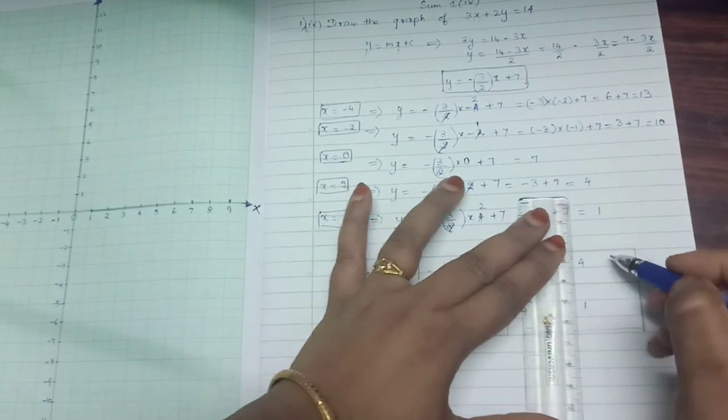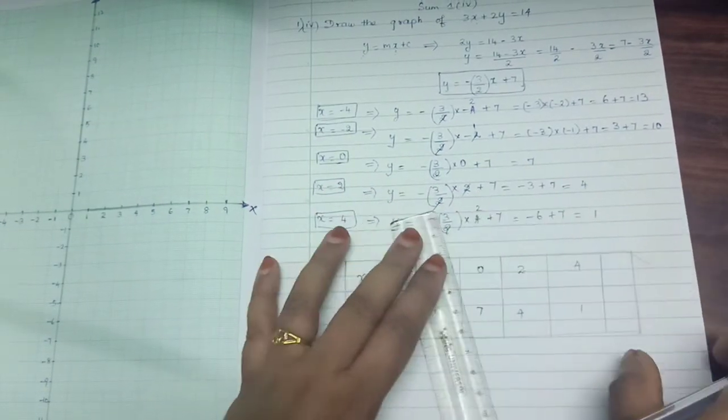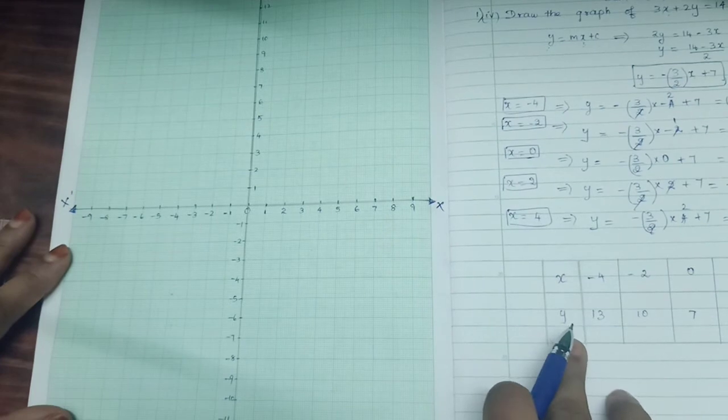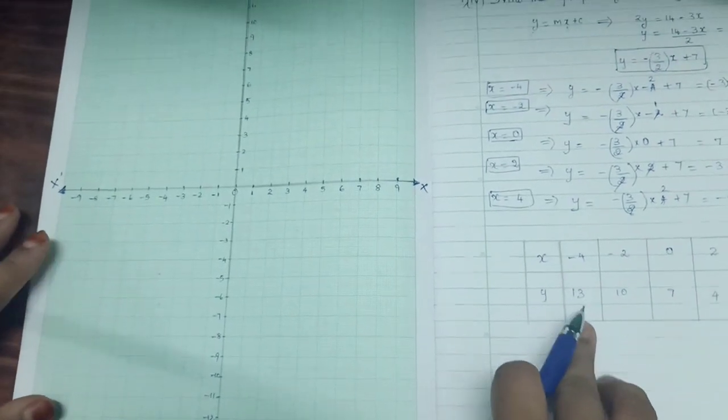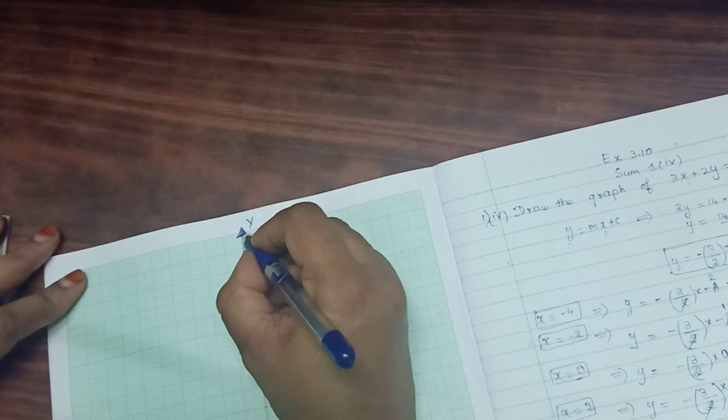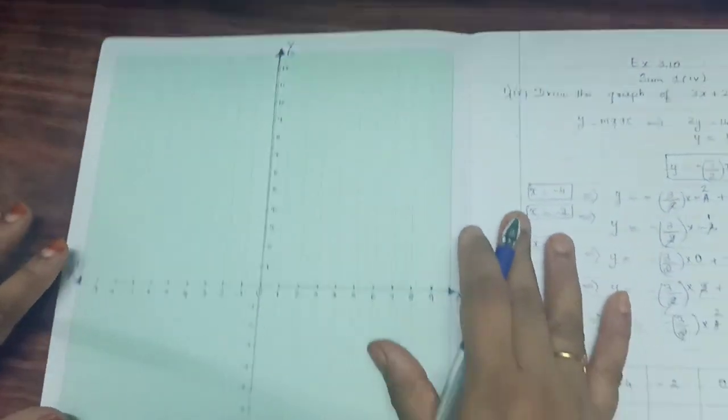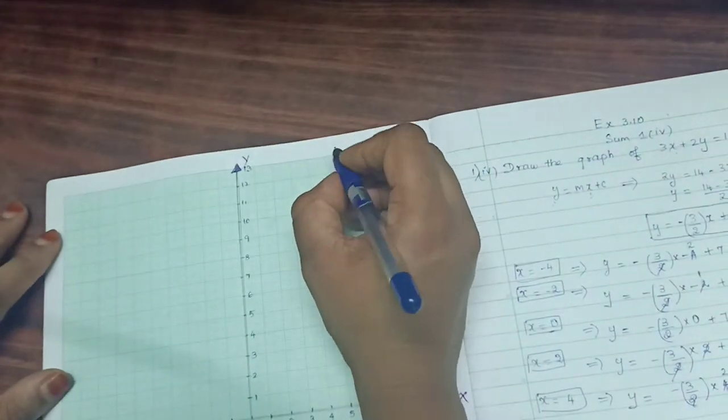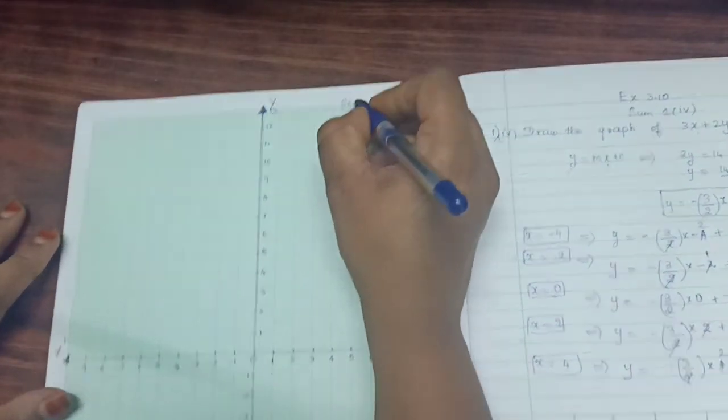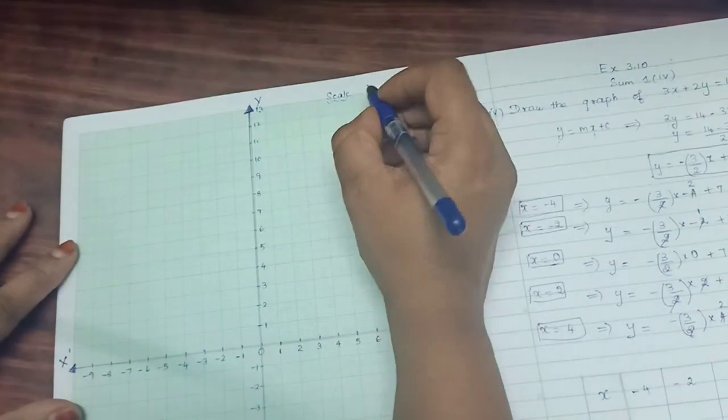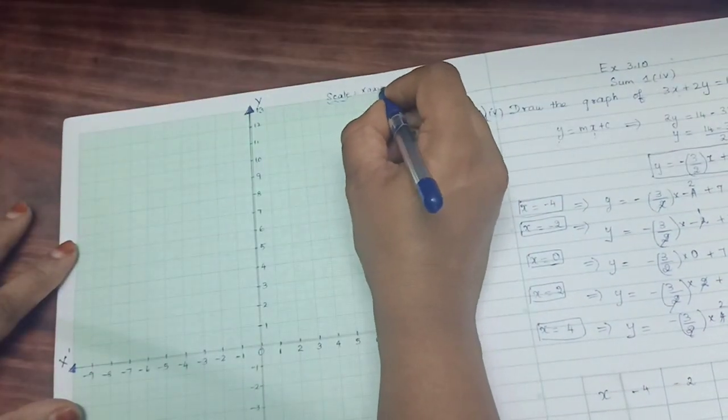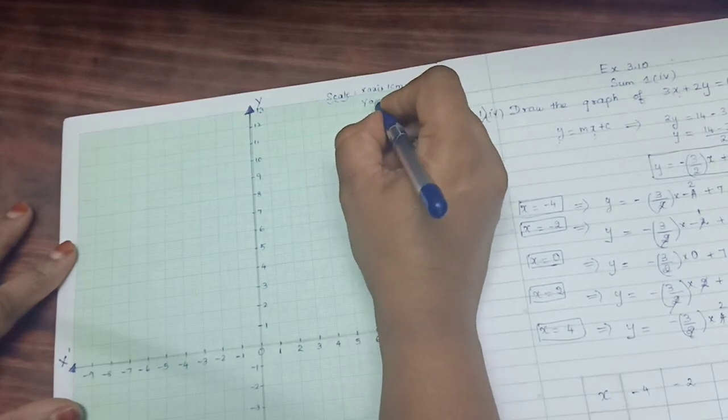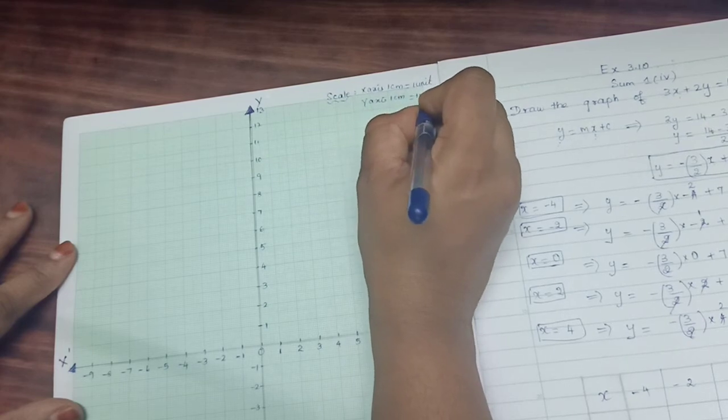And now we can go to the graph. Mark x axis and y axis neatly. Look at the points. We have y value 13. We can mark it. This is 13 only, top one. So we can take x axis. How will you write the scale? 1 cm equals 1 unit. Scale x axis, 1 cm equals 1 unit. Y axis also same, 1 cm equals 1 unit.